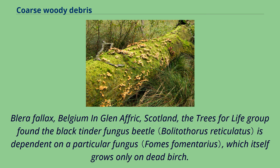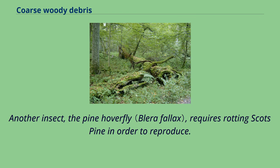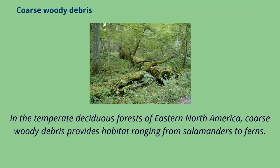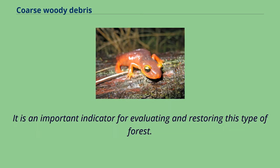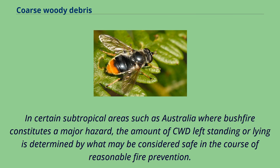The Trees for Life group found the black tinder fungus beetle is dependent on a particular fungus which itself grows only on dead birch. Another insect, the pine hoverfly, requires rotting Scots pine in order to reproduce. In the temperate deciduous forests of eastern North America, coarse woody debris provides habitat ranging from salamanders to ferns and is an important indicator for evaluating and restoring this type of forest. In certain subtropical areas such as Australia where bushfire constitutes a major hazard, the amount of CWD left standing or lying is determined by what may be considered safe in the course of reasonable fire prevention.